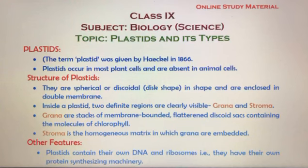One of the examples of Plastids is the chloroplast, which is the most commonly known type. Chloroplast consists of chlorophyll, which is a photosynthetic pigment.